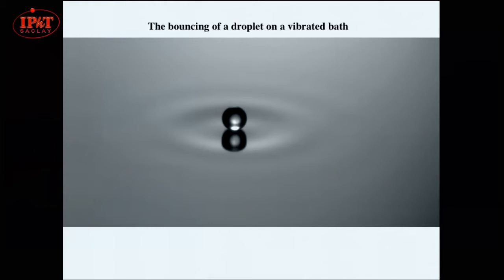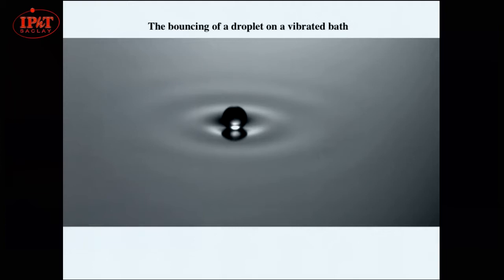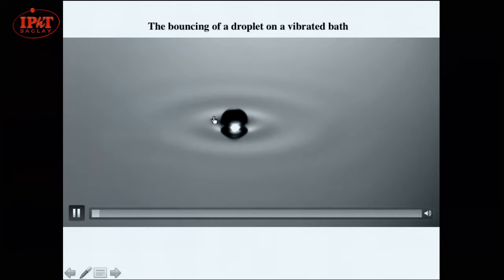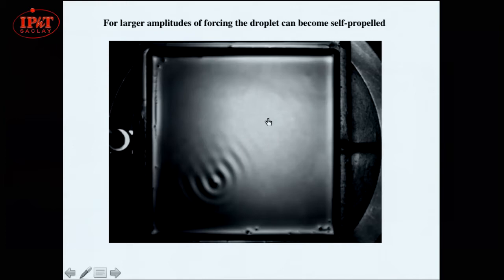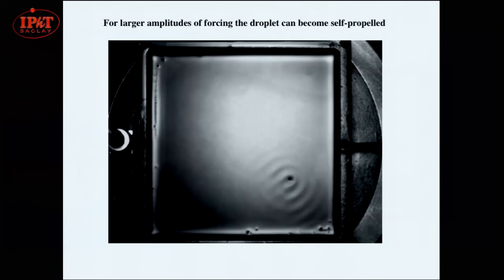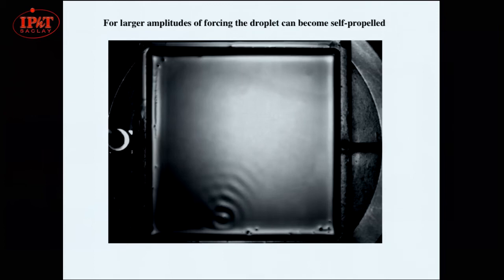Typically, the drop is one millimeter in size, and the vibration frequency is 50 or 80 hertz, depending on conditions. This is what it looks like in slow motion — that's the basic bouncing of a drop on a fluid bath. But while doing this experiment, we found there was another regime: in real time, you can see the drop moves spontaneously at constant velocity as it is coupled with a quite intense surface wave.